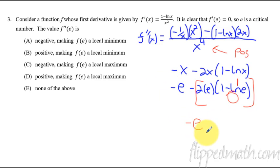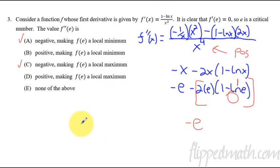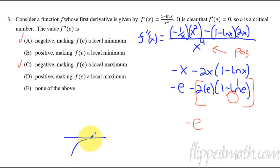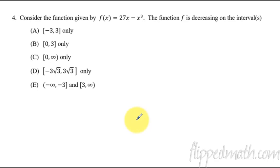So I'm left with just negative e in the numerator. The denominator was positive (e to the fourth), so the second derivative is negative. A negative second derivative means the function is concave down — shaped like an upside-down U — which forces the critical point to be a local maximum.